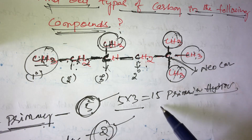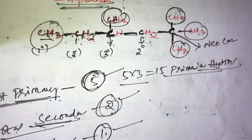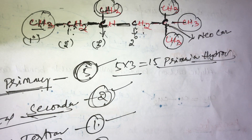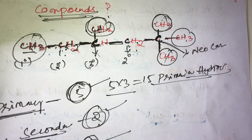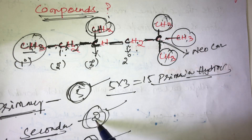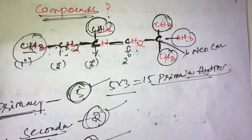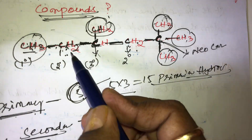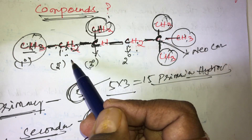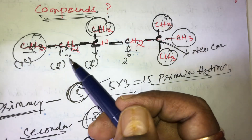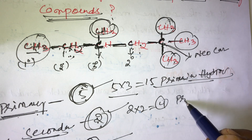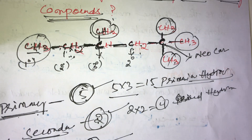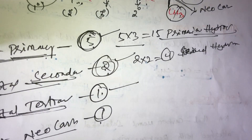Each primary carbon has three hydrogens — 3+3+3+3+3 = 15 total. For secondary hydrogens: secondary carbons have secondary hydrogens. There are 2 secondary carbons in this compound, and each secondary carbon has 2 hydrogens. So 2 × 2 = 4 total secondary hydrogens.